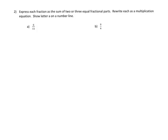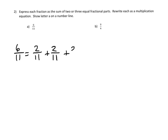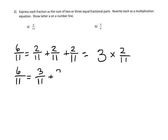Now express each fraction as the sum of two or three equal fractional parts, then rewrite as a multiplication equation. Teachers, we're writing things as multiplication because it leads into future topics for fifth graders. So we have 6/11, and we can write it as 2/11 plus 2/11 plus 2/11, which gives us 3 times 2/11. Or we could write it as 3/11 plus 3/11, which is the same as 2 times 3/11.